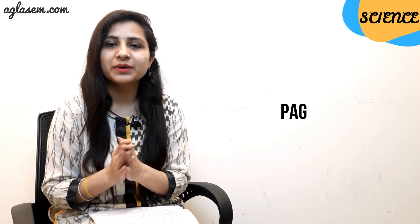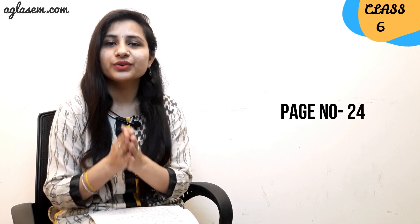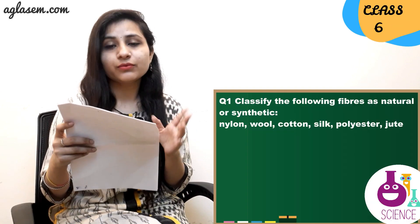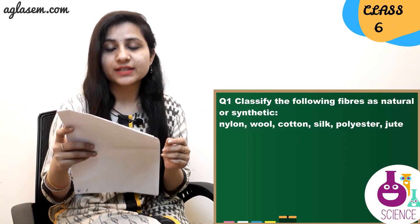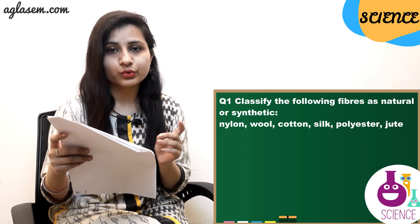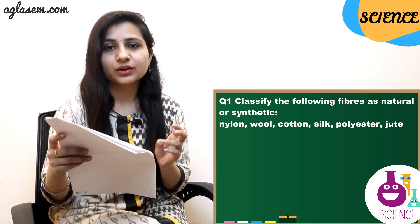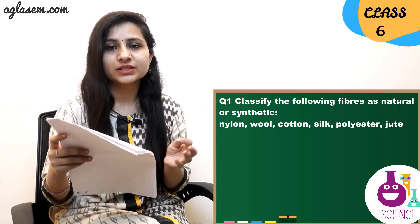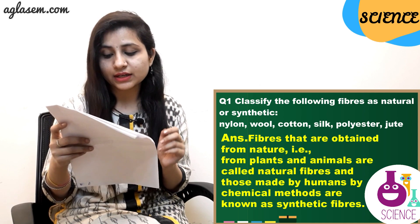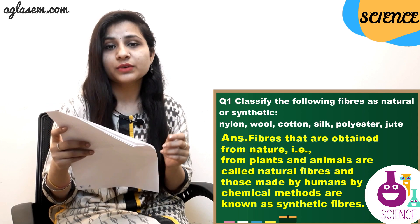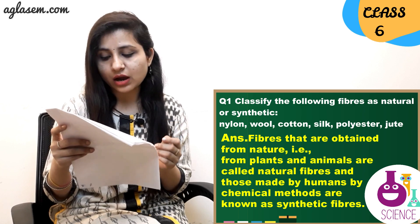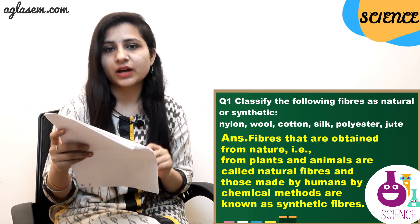Turn to page number 24, Question 1: Classify the following fibers as natural or synthetic — nylon, wool, silk, cotton, polyester, and jute. The answer is: fabrics that are obtained from nature, that is from plants and animals, are called natural fibers.